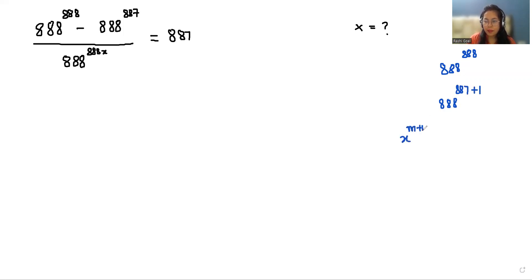With the help of the rule x power m plus n we can write it as x power m times x power n, so we can break it as 888 power 887 times 888 power 1. So I'm going to replace it.